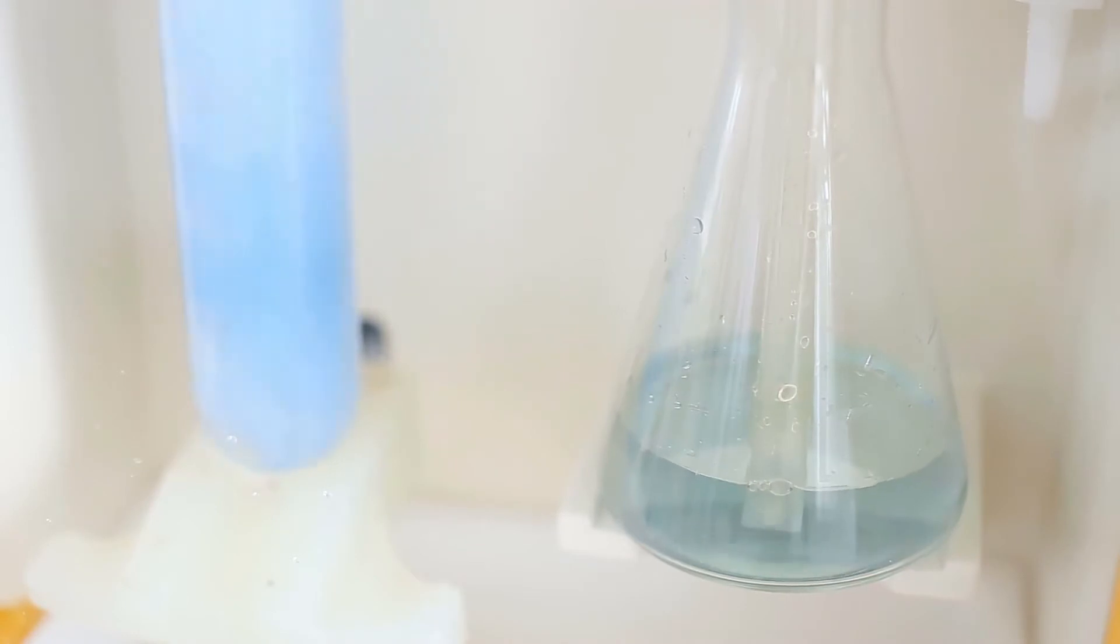When people ferment milk to make cultured dairy products like yogurt and cheese, these bacteria are often present. As they work, they raise the acidity of the culture, inhibiting the growth of harmful bacteria that prefer more neutral environments.